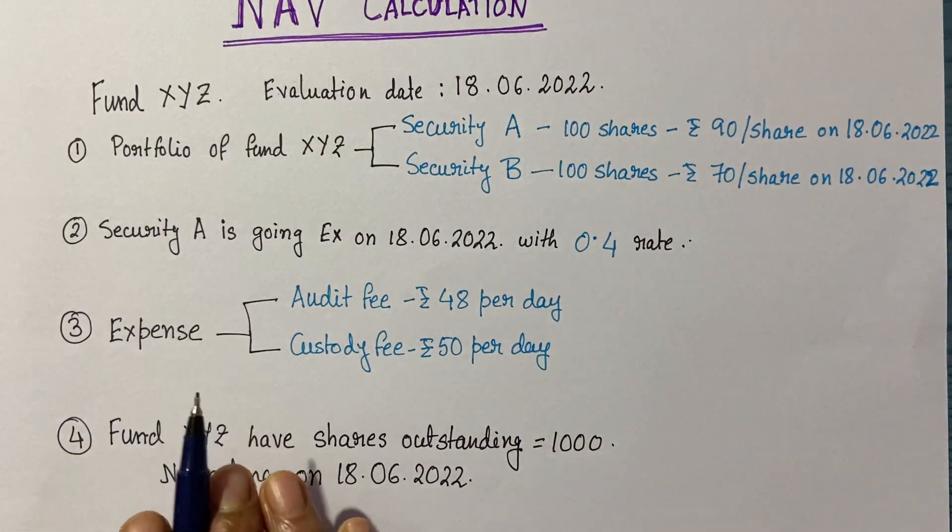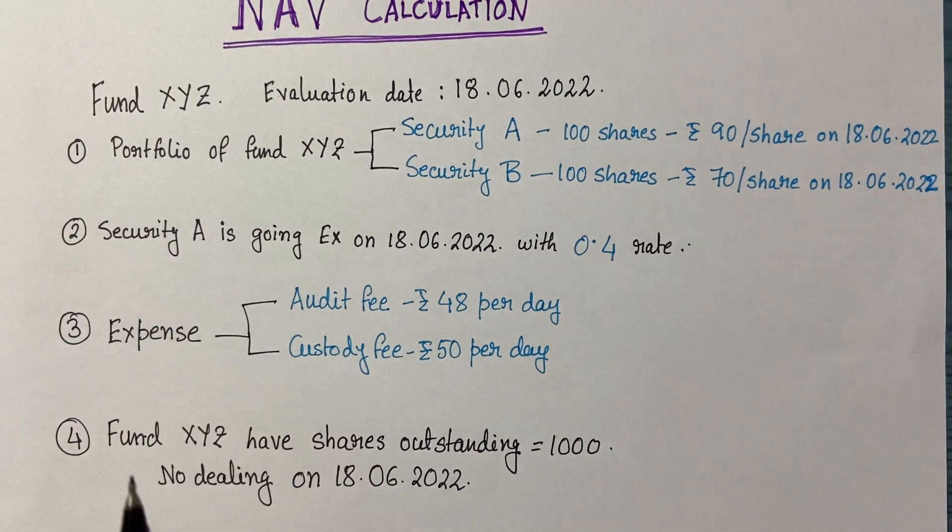The third component is expense. As we know, each fund will have some income and expense components. I'll create a separate video on the different kinds of expenses. To give you a brief overview, in a fund we can have two different kinds of expenses.